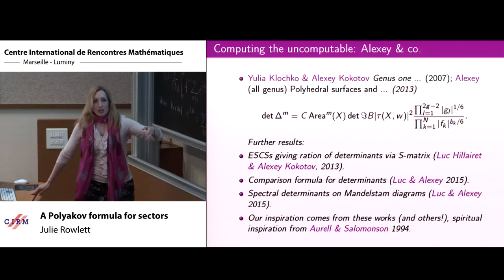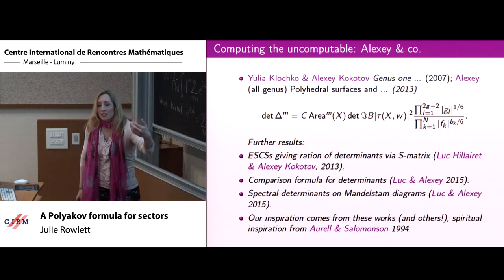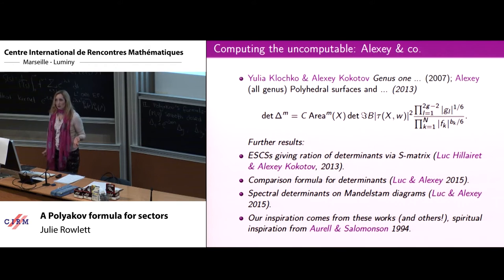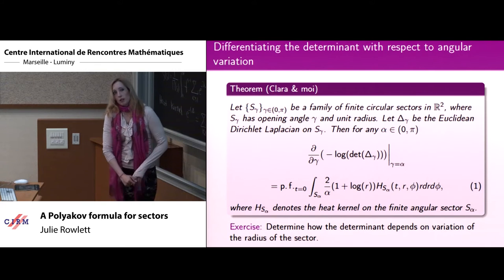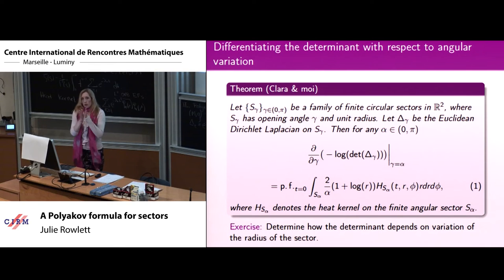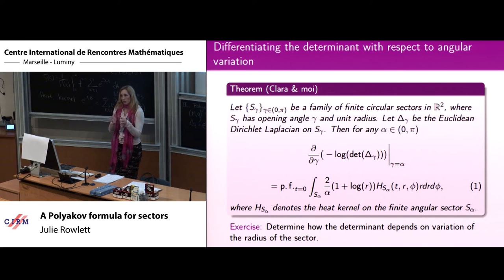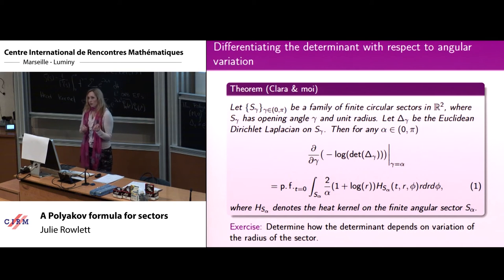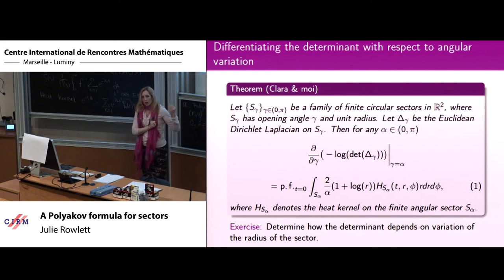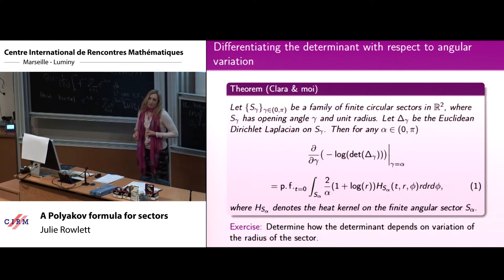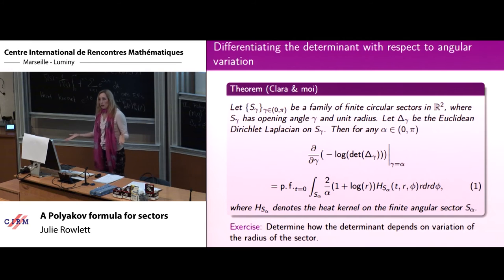We also have a lot of inspiration from the work of some physicists — I call it spiritual inspiration. This object, ζ'(0), is not very obviously computable — that's why I called this 'computing the uncomputable.' Our first result shows how, if you vary the opening angle of a circular sector, the zeta-regularized determinant depends upon that variation. There are two difficulties: one geometric, in the presence of the corner (the conical singularity), and one analytic, since expressing the variation as a conformal change of metrics requires a singular conformal factor.